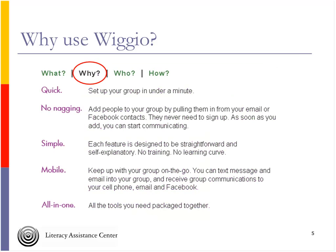I've used WIGIO in a variety of situations — for groups or meetings where organizations want to share content between meetings, and with students where you meet in class but then have off-site work to share back. It's similar to what we're doing over these five weeks: meeting virtually via webinar and then having a period between each webinar where you might want to go off, do your own work, share it back, or ask questions. WIGIO works really well for that — it's a great place to meet online.